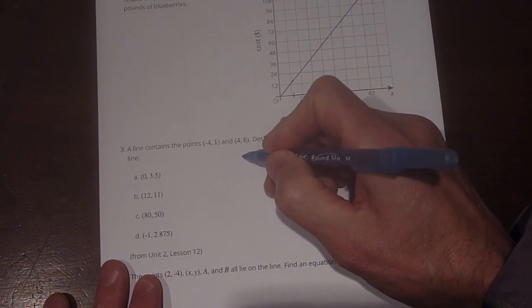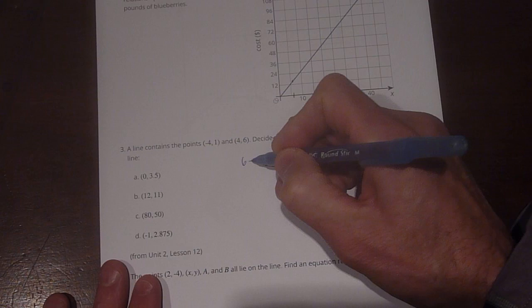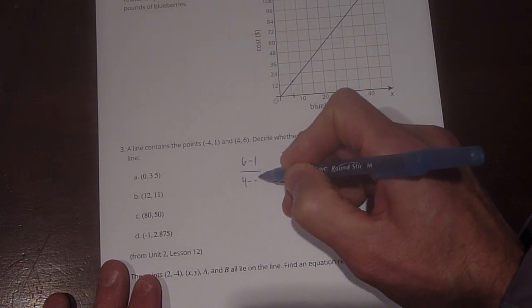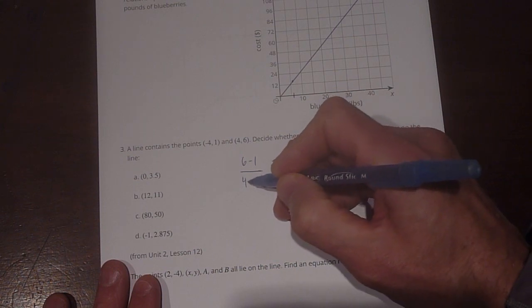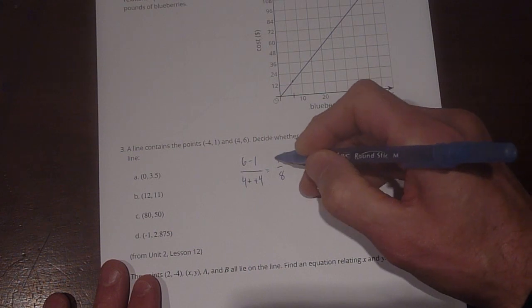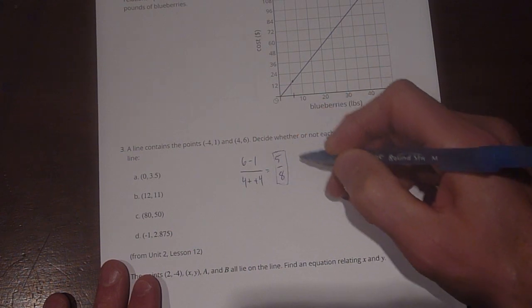So what we're going to say here is our slope is going to be (6 - 1) divided by (4 - (-4)). Okay. So minus a negative 4 becomes plus a positive. So that's going to equal 5 over 8. So our slope is 5/8.